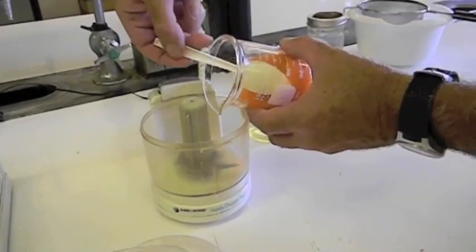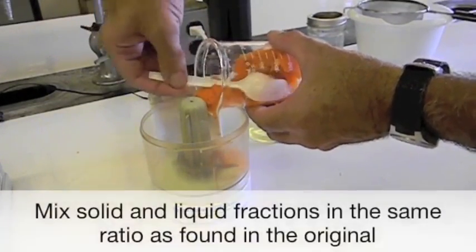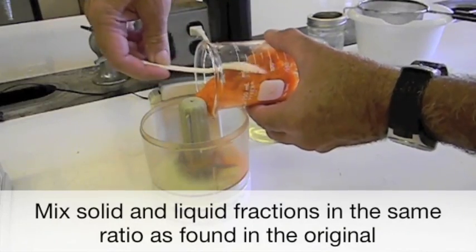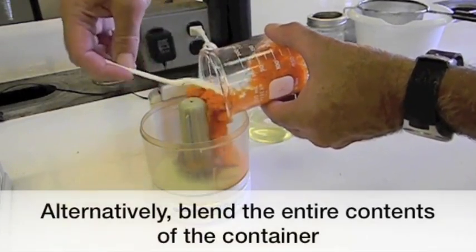To determine the final equilibrated pH, mix solids and liquid fractions in the same ratio as found in the original food.